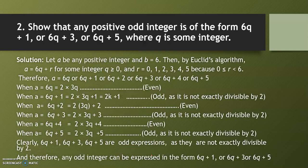Likewise you can do all these questions. Now come to question number 2: Show that any positive odd integer is of the form 6q + 1, 6q + 3, or 6q + 5, where q is some integer.